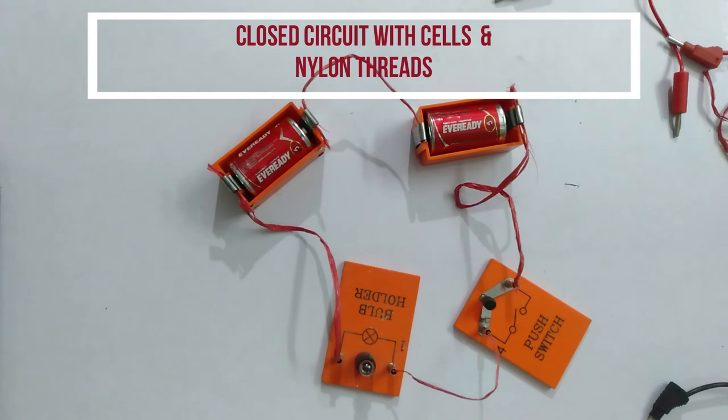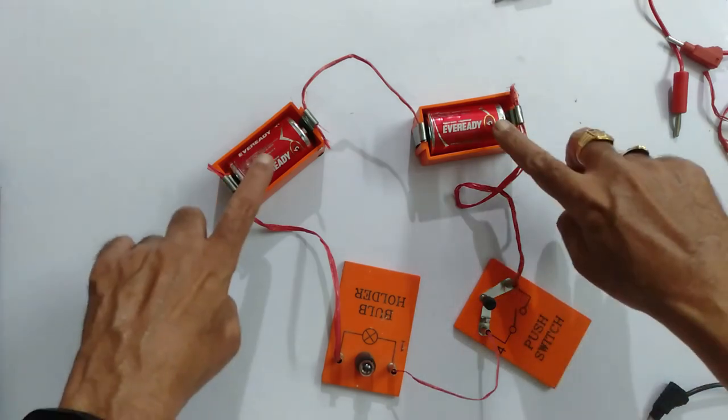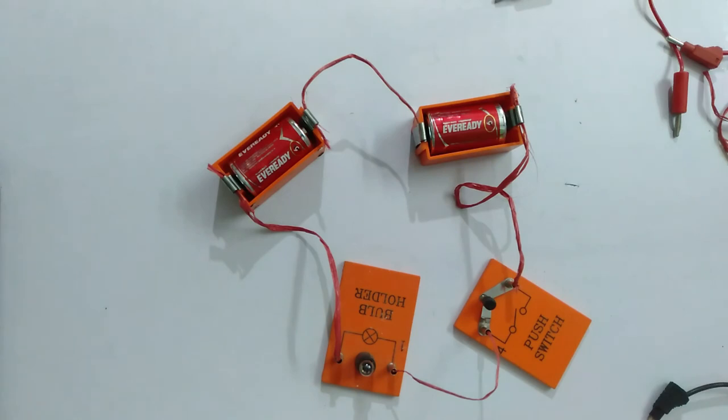To light up a bulb or to run a motor or to run any electrical appliance, the first requirement is the power. The second requirement is the conducting wires. This nylon thread is unable to conduct the charge.